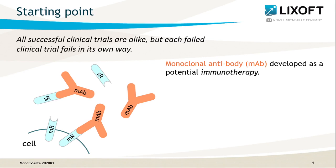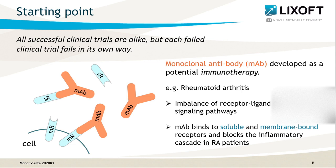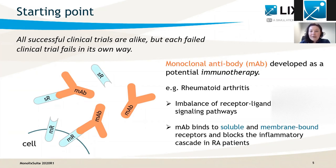Imagine that you are working on a monoclonal antibody that might be potentially used in immunotherapy. Many autoimmune diseases, such as rheumatoid arthritis, show imbalance of certain receptor-ligand signaling pathways, which can be critical in developing inflammation. So targeting these interactions by binding the monoclonal antibody with receptors could prevent the destructive inflammatory cascade.